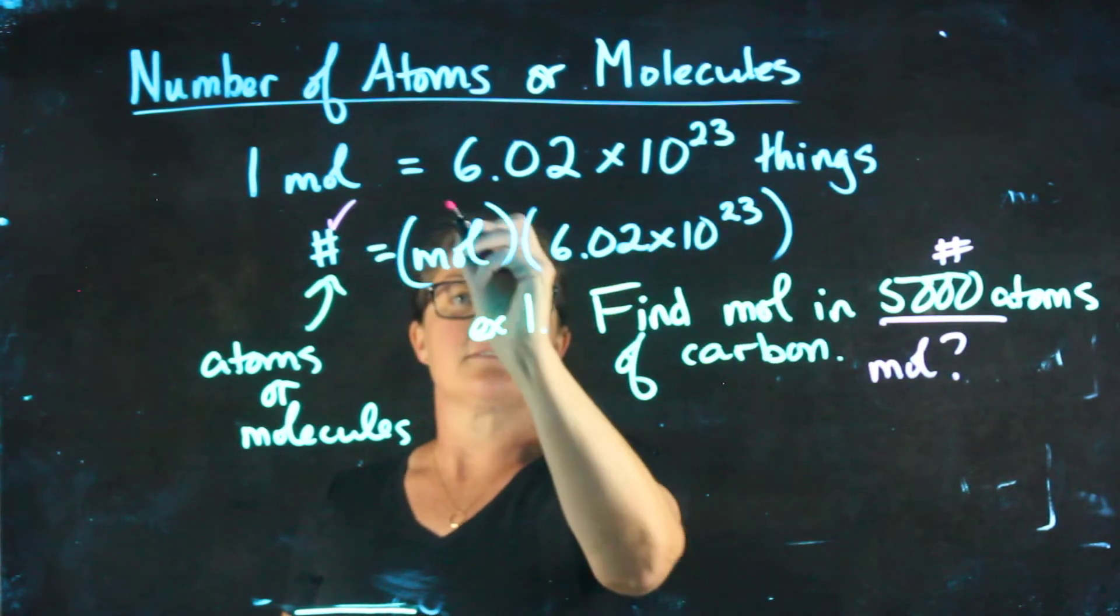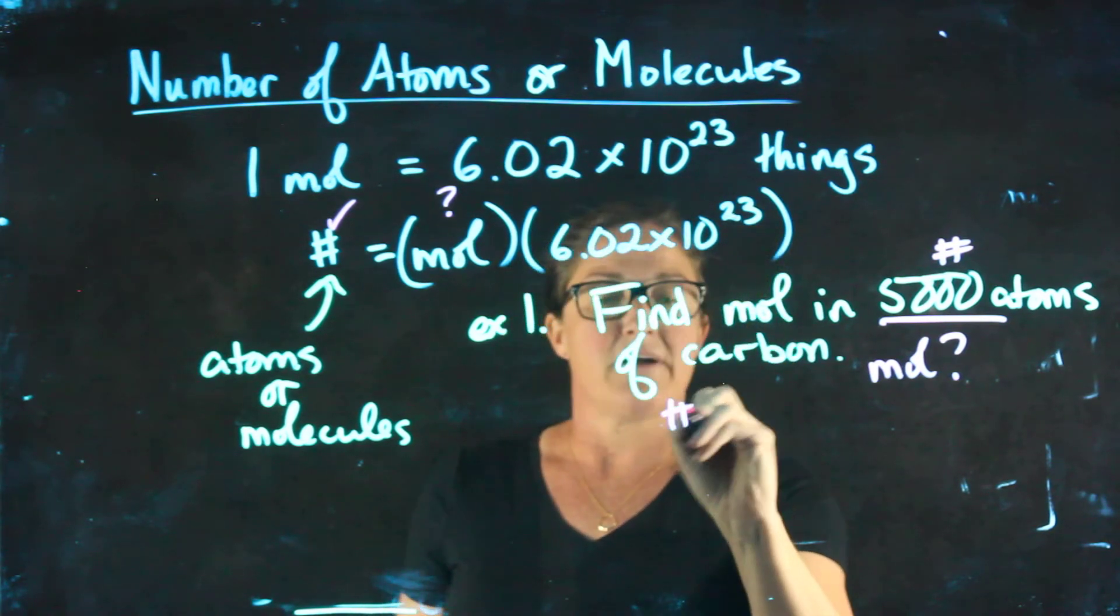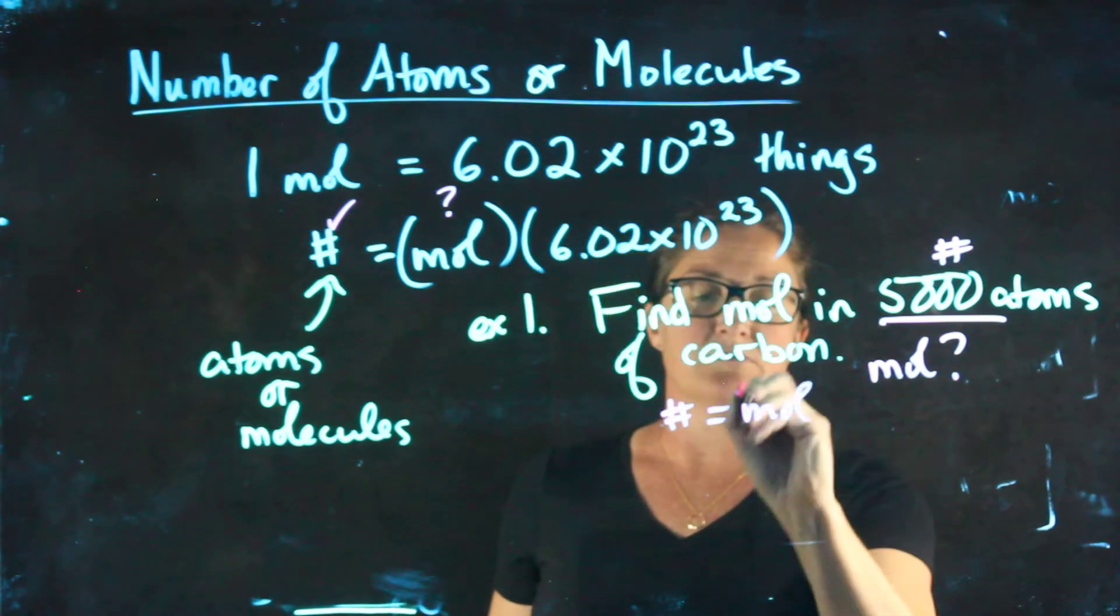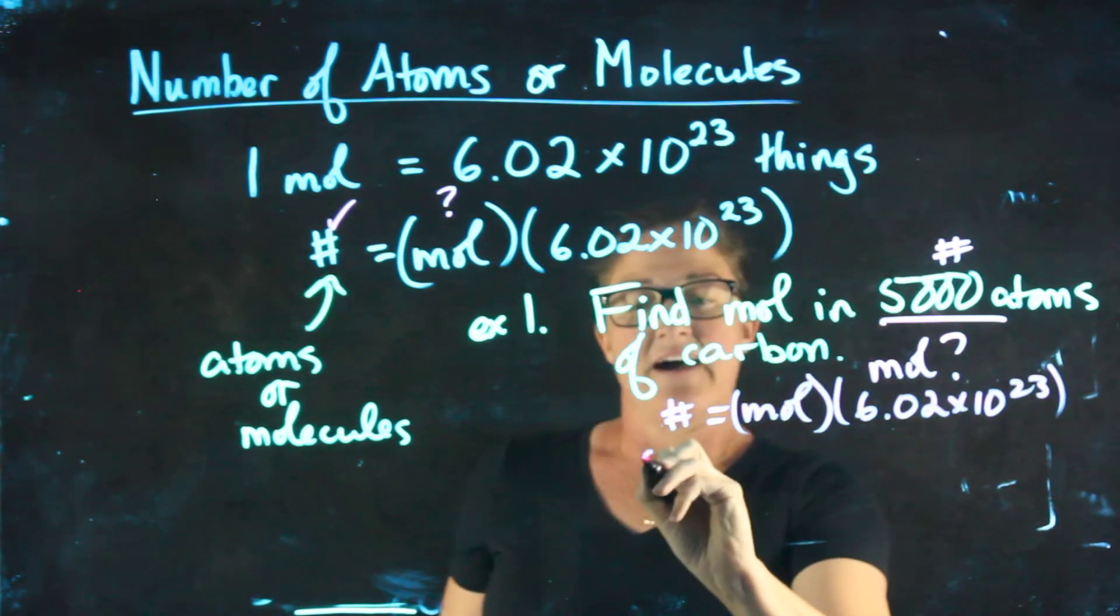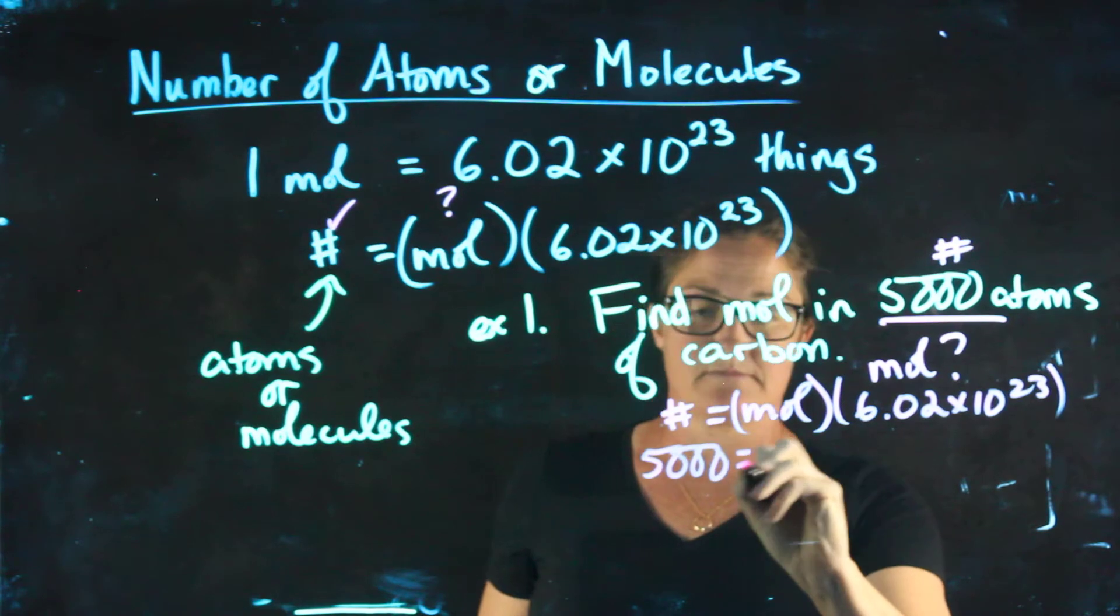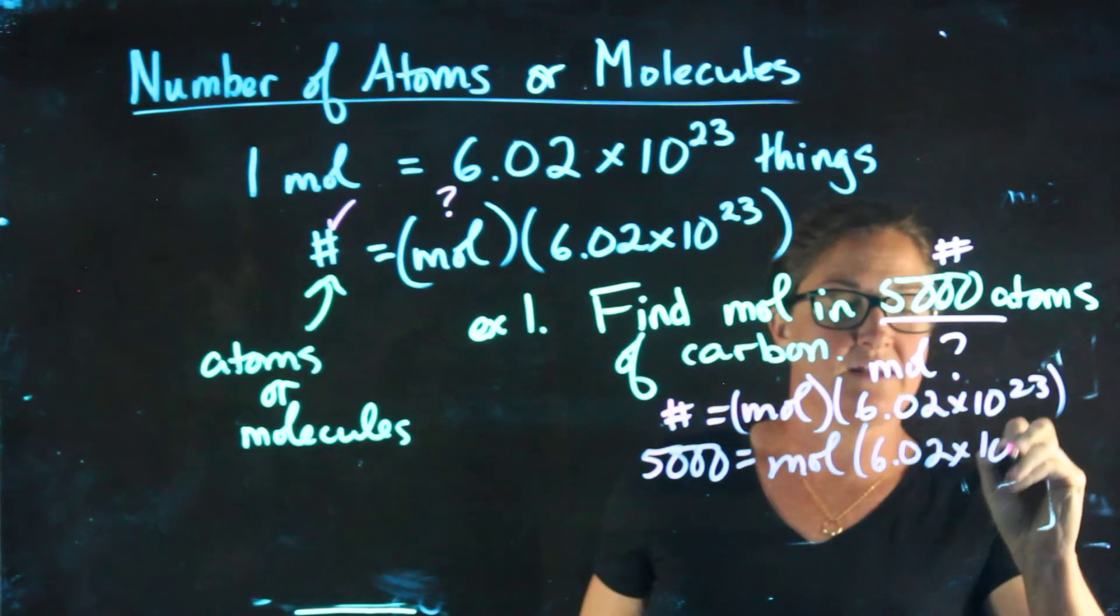So I know this, I'm trying to find that, and I know Avogadro's number. So my formula is number equals moles times Avogadro's number. 5000 equals moles times 6.02 times 10 to the 23rd.